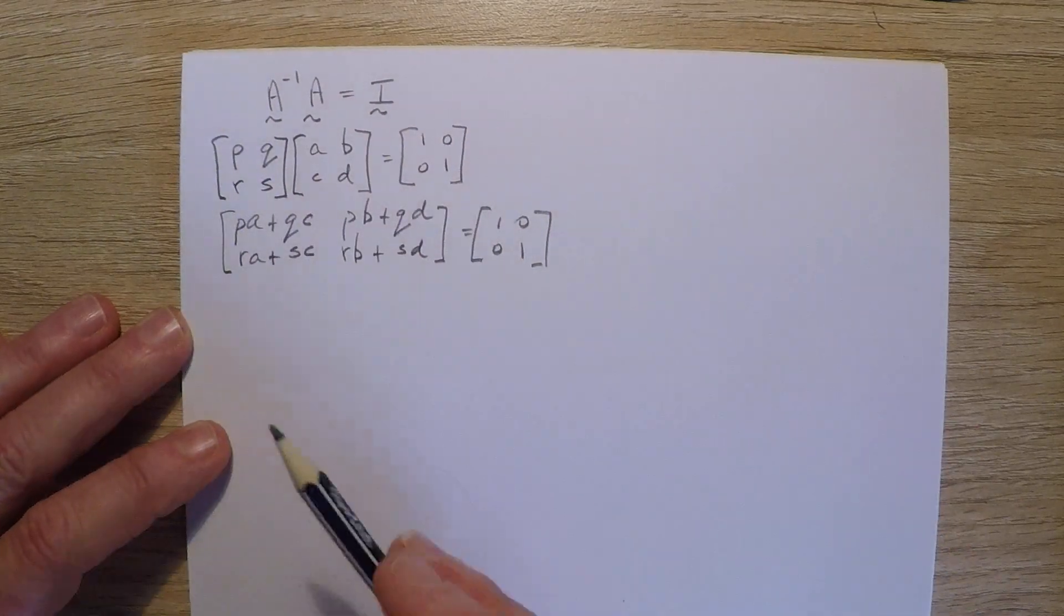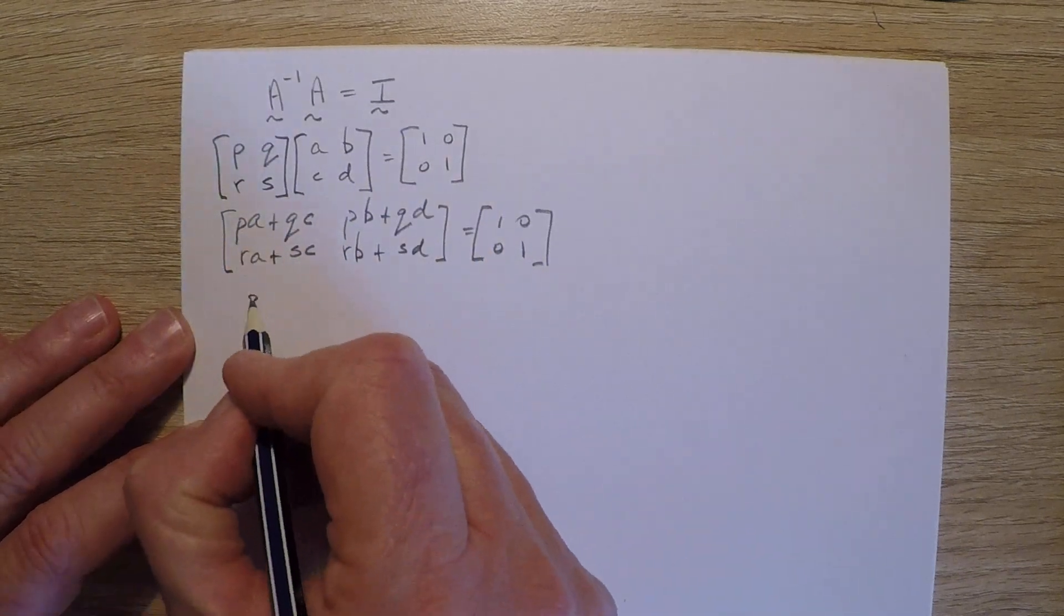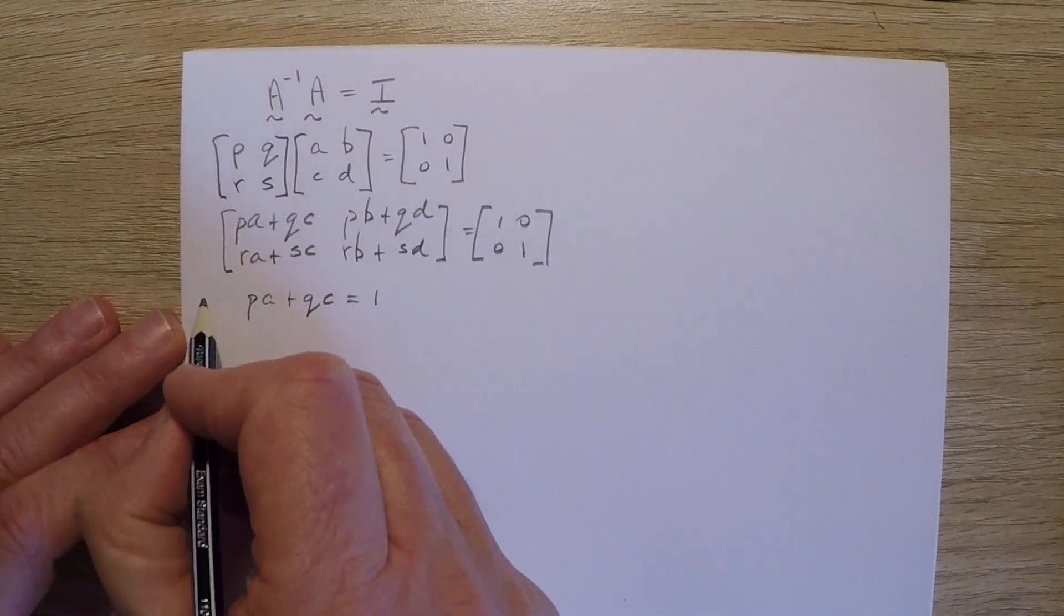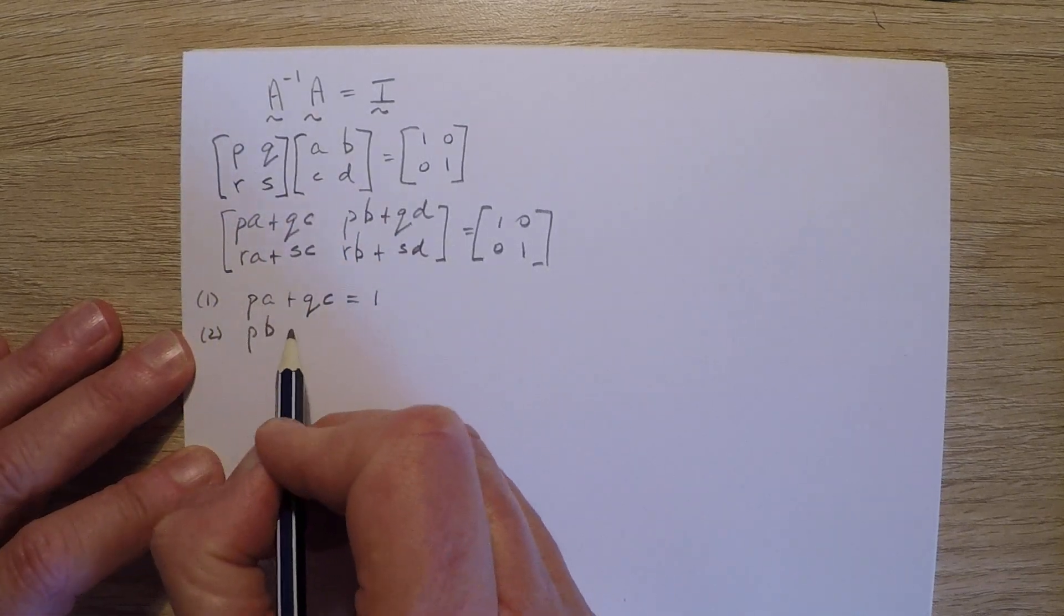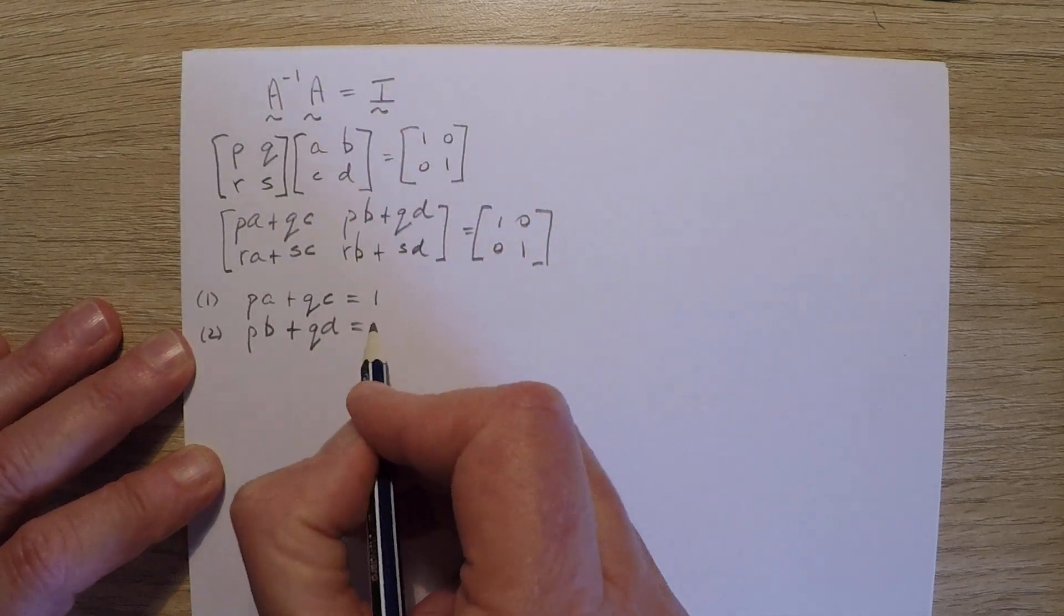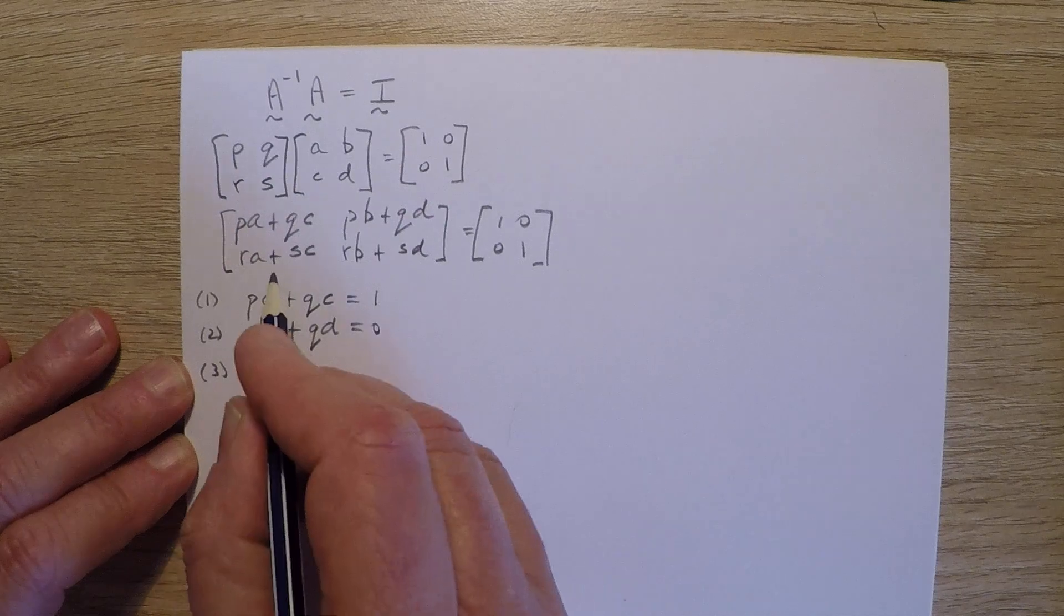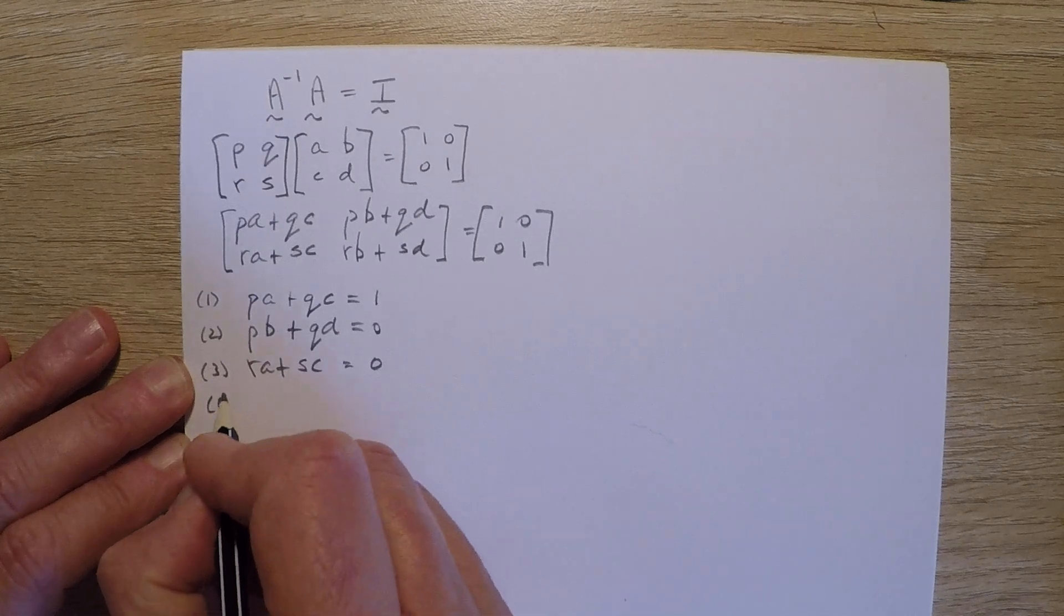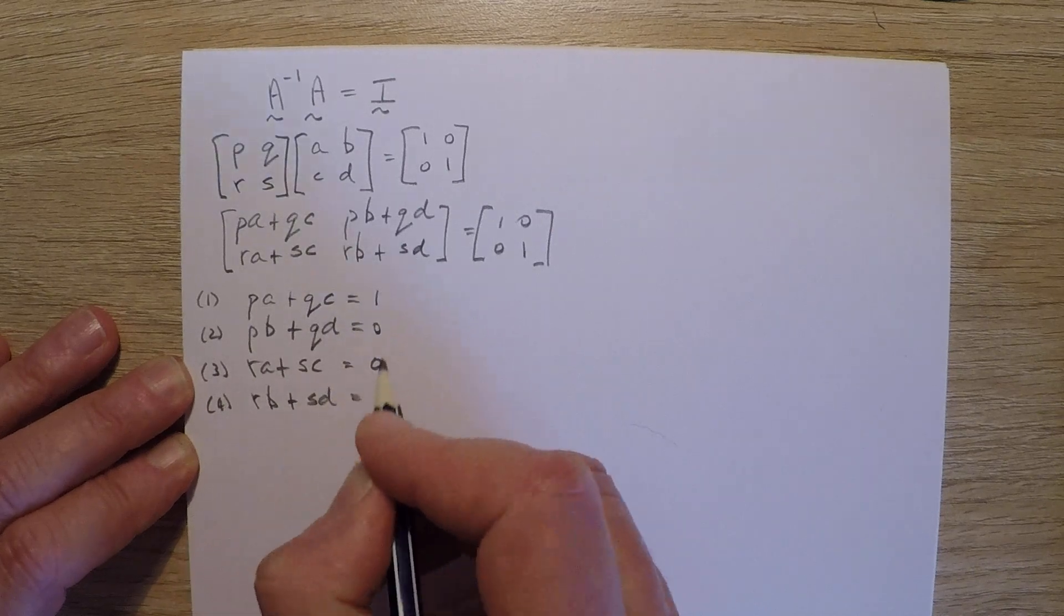And from this we can see that each element of this product must correspond to each element of the identity matrix. So I have four equations. PA plus QC must equal 1. Let's call this equation 1. Equation 2: PB plus QD must equal 0. RA plus SC must also equal 0. And RB plus SD must equal 1.